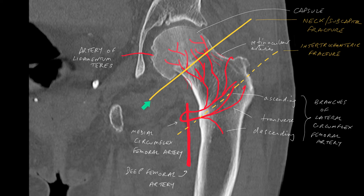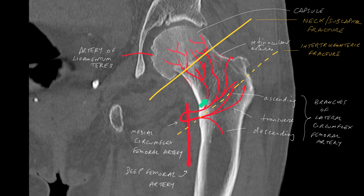So, if you get a fracture of the neck of the femur or in the sub-capital region, you interrupt the blood supply that supplies the femoral head, and the patient will ultimately get avascular necrosis of the femoral head. If, on the other hand, you have a fracture through the intertrochanteric region, you still have a blood supply to the femoral neck and the femoral head because this has not actually interrupted the medial circumflex femoral artery.